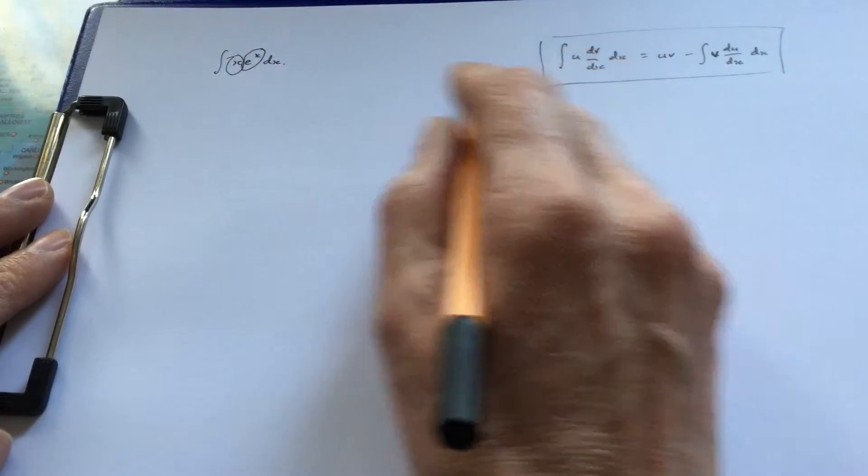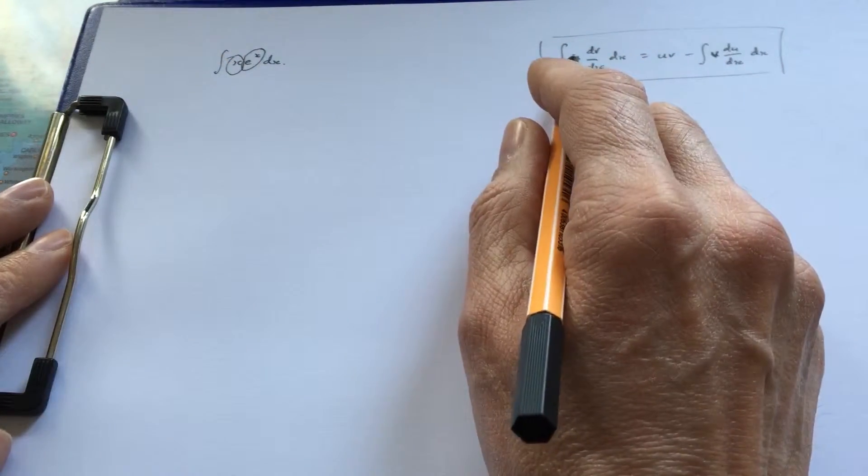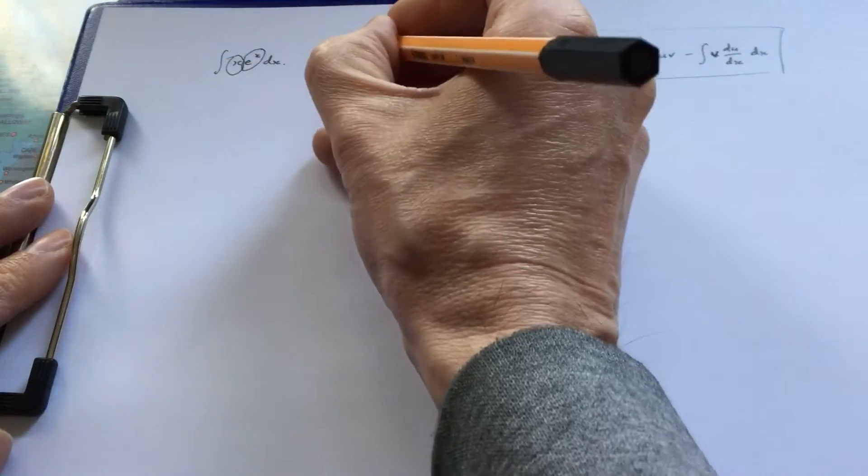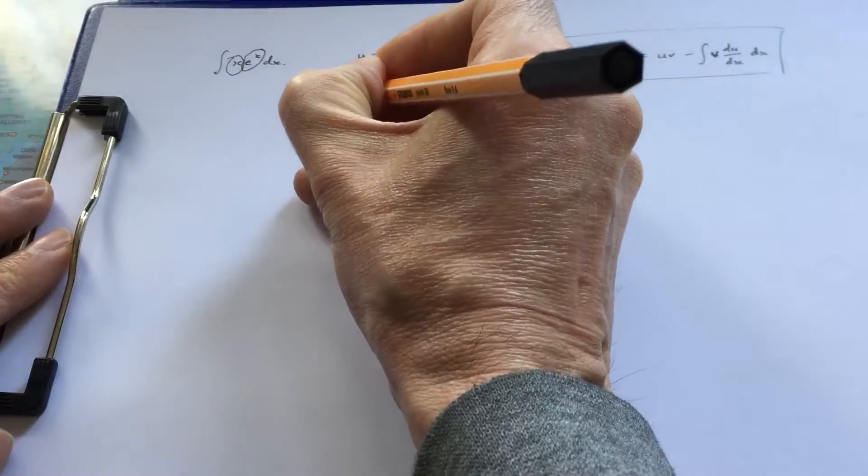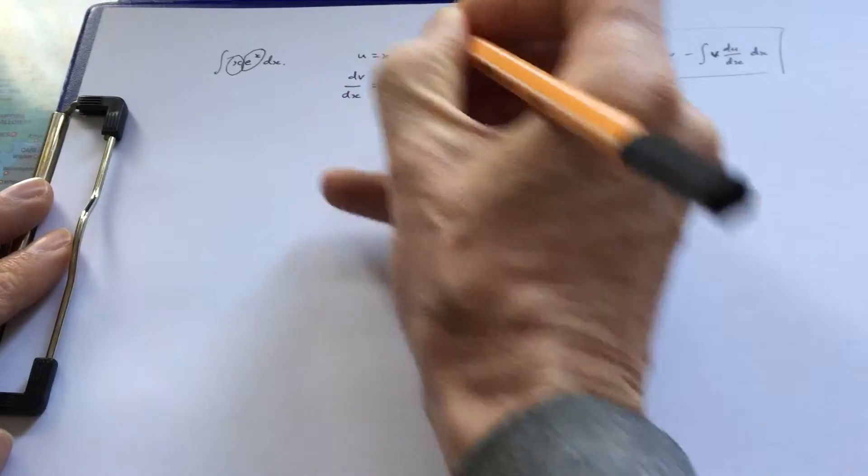To do it the most straightforward way, we'll take u = x and dv/dx = e^x.